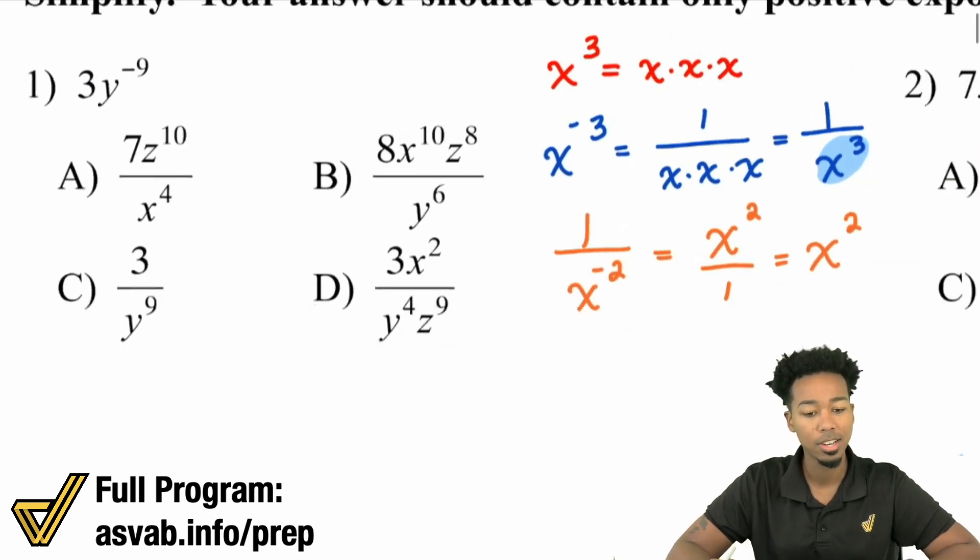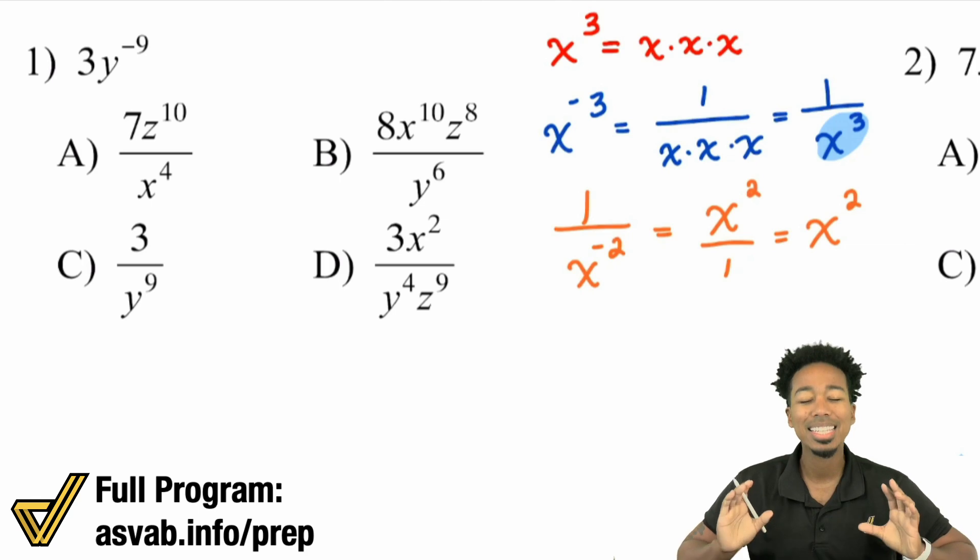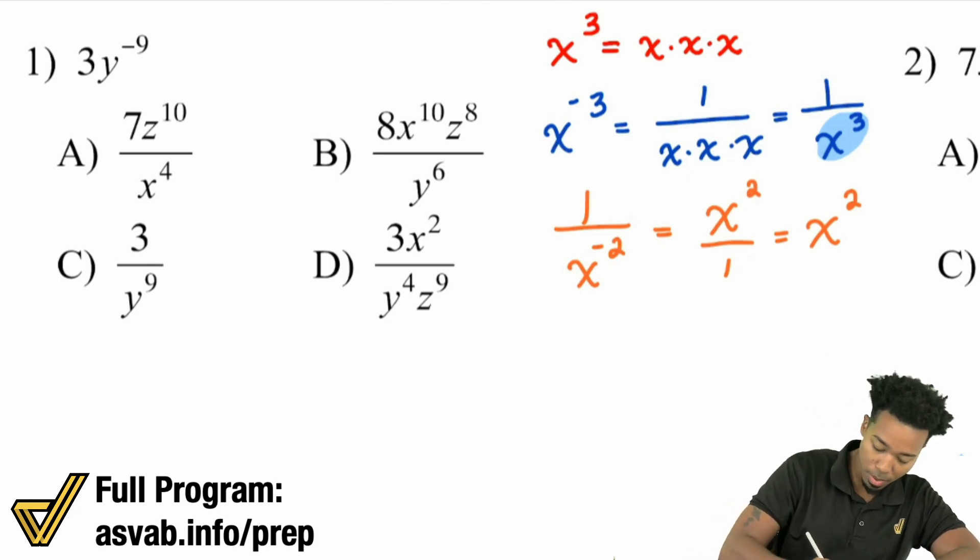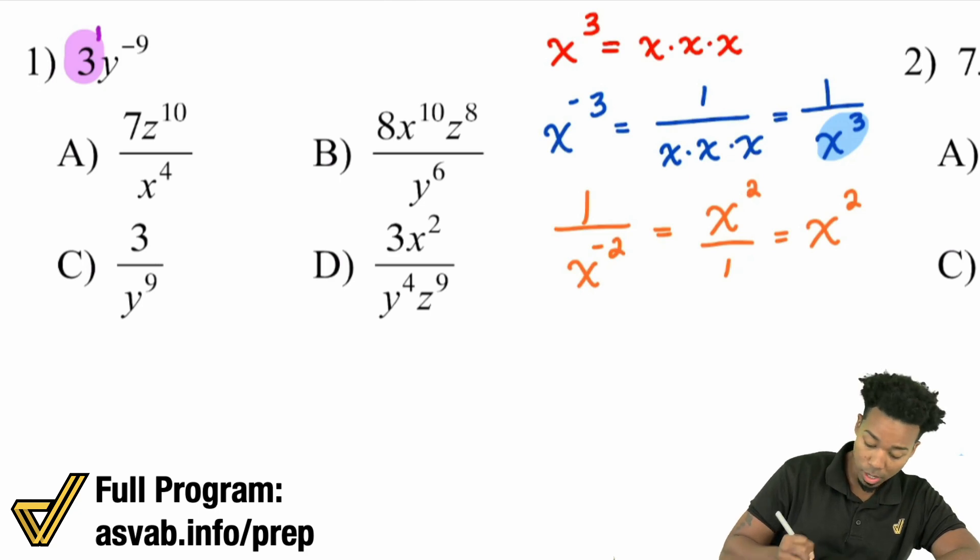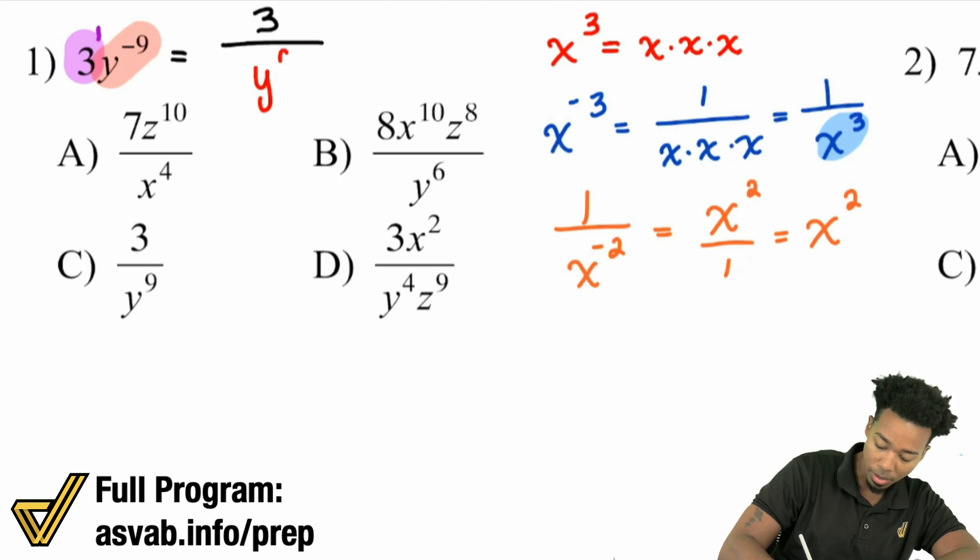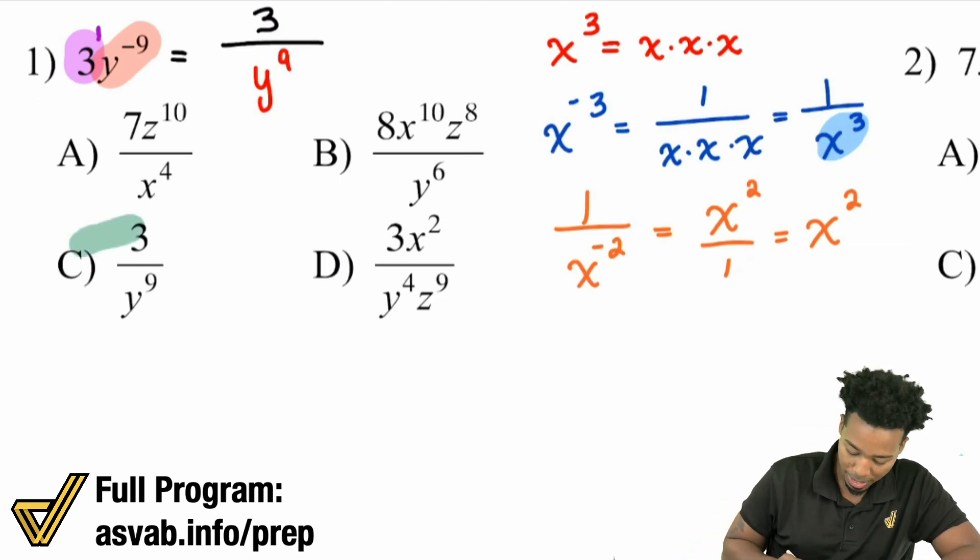But now let's go ahead and put this into practice with number one, we have three y to the power of negative nine. So here's my also my one last rule here. Make sure that you're only handling the piece that has a negative exponent, only handle the piece that has a negative exponent. So for example, this three right here does not have a negative exponent. That's not a negative nine. Remember, when you don't see an exponent, that's just one. That is just one. So what this really becomes is the three stays where it is. But the y to the power of negative nine, that's what changes to y to the power of positive nine. I do want to make that very clear. It is only the piece that's negative that gets moved. And so boom, that's going to be C here.